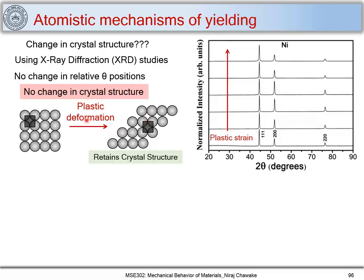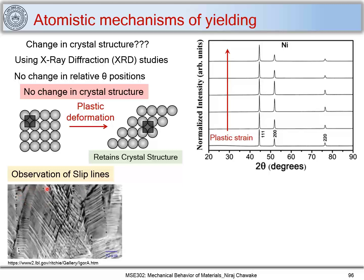So we have a profound insight: plastic deformation includes a shape change but no crystal structure change, and that is guaranteed using X-ray diffraction studies. Another observation people have made is the observation of slip lines. A micrograph shows lines on a surface that was initially polished like a mirror, and after deformation these lines were seen on the surface — these are called slip lines.